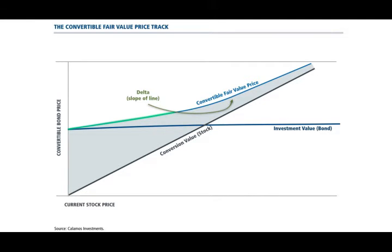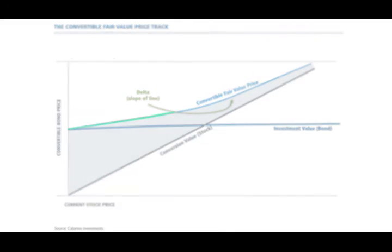How much the convertible rises or falls for a given stock price move is referred to as delta. Movement or volatility in a stock can come from either company-specific factors or market-related influences. Regardless, the more the stock moves, the more the delta changes and the more opportunities we have for gamma trading.